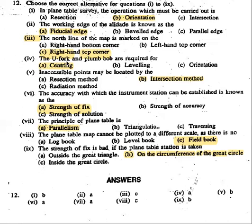Fourth question: What are the U-fork and plumb bob used for? The U-fork and plumb bob are required for centering. They are used to transfer the station onto the drawing sheet. The plumb bob is used for this purpose.